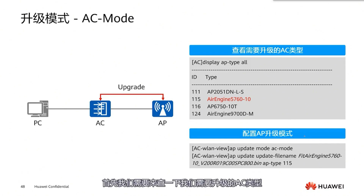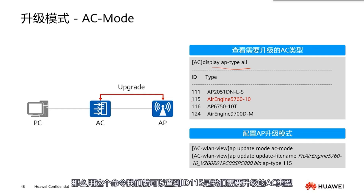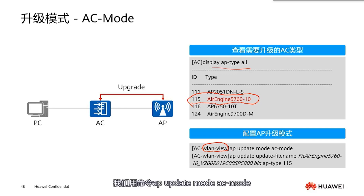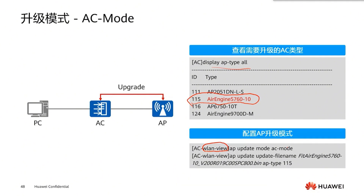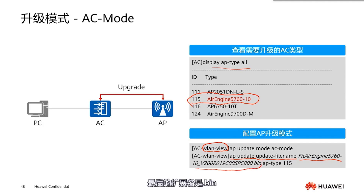For the detailed operational process: first, check the type of AP that needs to be upgraded using 'display AP type all' — here we find that ID 115 is the AP type to upgrade. Then, under the WLAN protocol view, use the command 'AP update mode AC mode' to set the AC to upgrade the AP. For the second step, use 'AP update update file name' specifying the bin file name, then enter AP type 115E, which is the AP model.